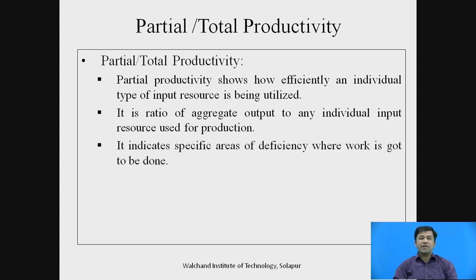Partial productivity indicates specific areas of deficiency where work needs to be done. If product A is using the same input but producing less output, its productivity is lower and we can attack that bottleneck resource to improve it. In HR terms, performance appraisals are done using partial productivity — a department performing well gets more appraisal, while a department performing less gets a lower appraisal.